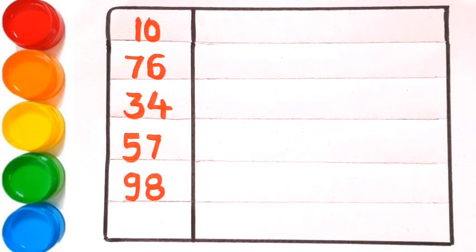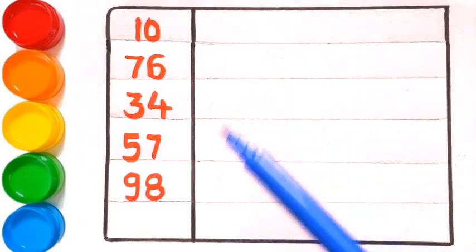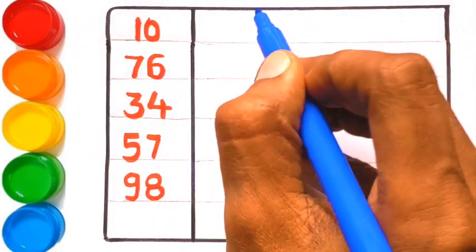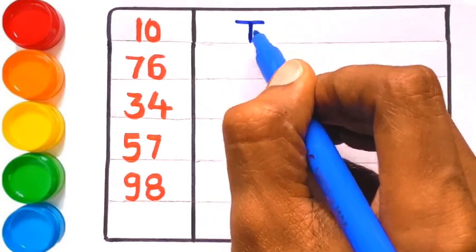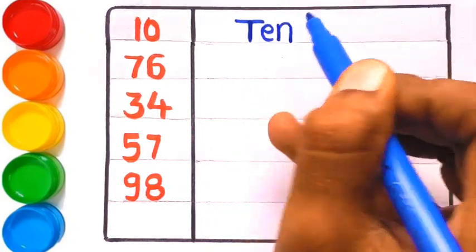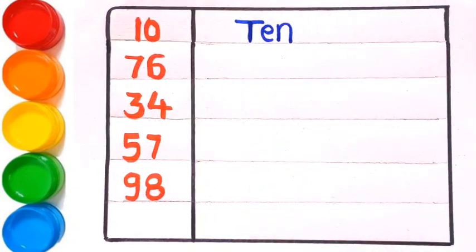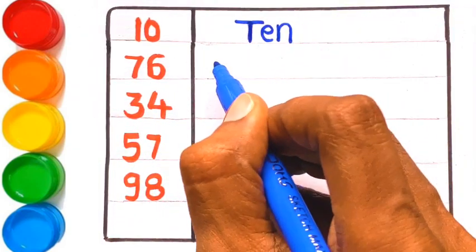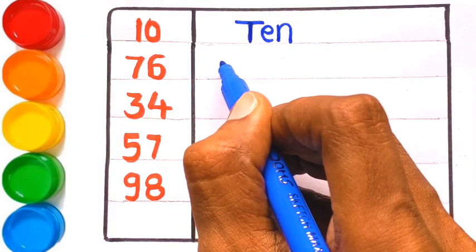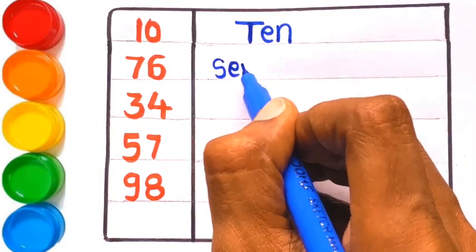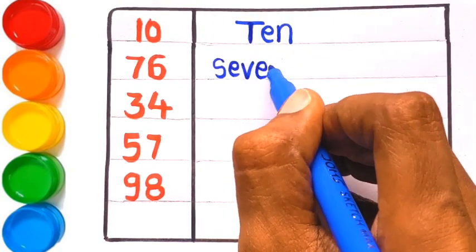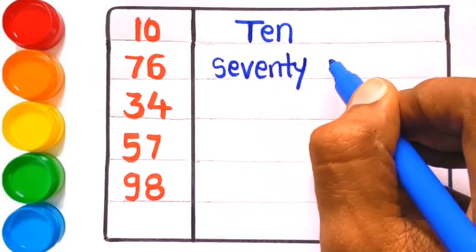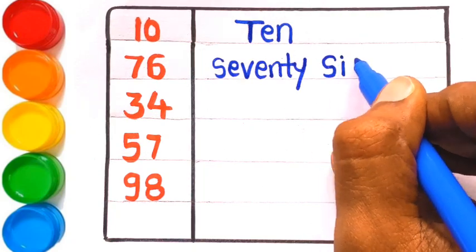Let's write number names of the following numbers. 10 — T-E-N, ten. 76 — S-E-V-E-N-T-Y...